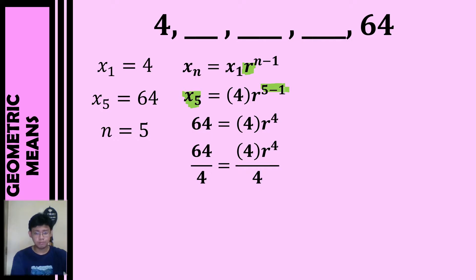Let's divide both sides by 4 to isolate our variable. So 64 divided by 4 gives us 16. And then to eliminate the exponent from our variable, we need to get the fourth root of this term. So the fourth root of 16 equals 2. So our common ratio for this geometric sequence will be 2.